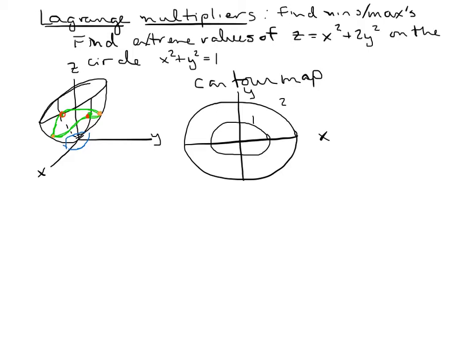So maybe there's one paraboloid when z is equal to 1 and here's another one when z is equal to 2 and we could continue this. When you look at that circle,